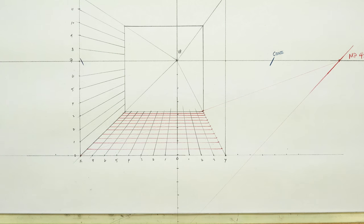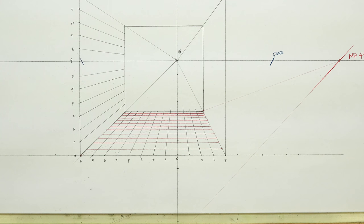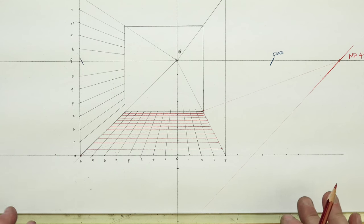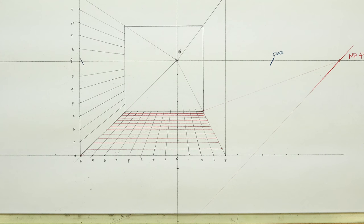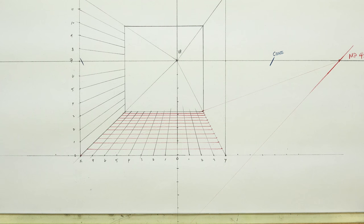And so now we can scale and reference anything we want to put in that room with confidence. This is an accurate representational portrayal of a 12-unit, 12-foot, 12-meter — whatever it is you want — room. Whether you're on the imperial or metric system, you just need to be consistent with your units.